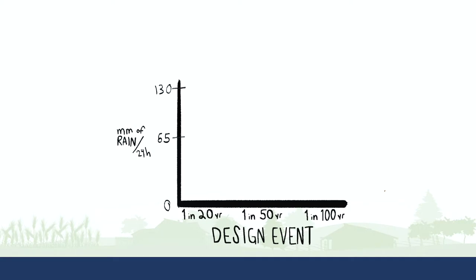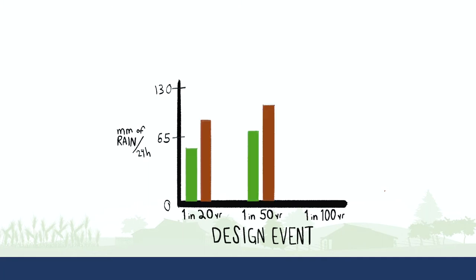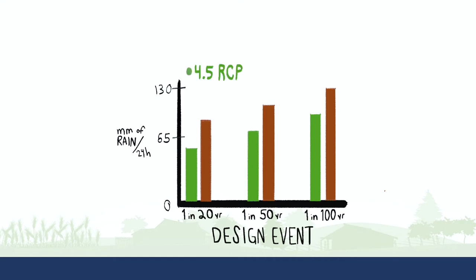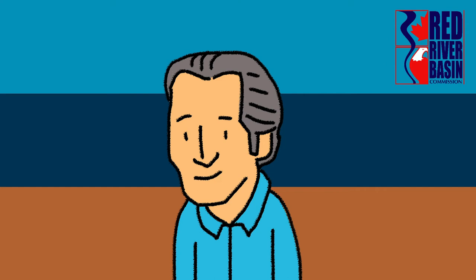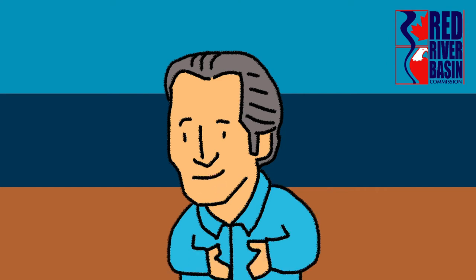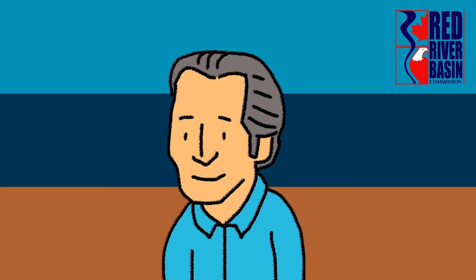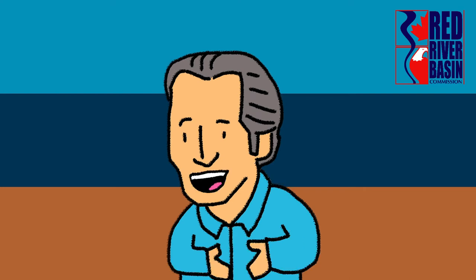We can estimate how many millimeters of rain will fall in a 24-hour period, comparing a 1-in-20-year event, a 1-in-50-year event, and a 1-in-100-year event with two different standard climate change scenarios called RCP 4.5 and RCP 8.5. We compare these scenarios to the historic 1-in-20-year, 1-in-50-year, and 1-in-100-year events. The RCP 4.5 and 8.5 scenarios illustrate the effect of higher loading of greenhouse gases to the atmosphere.